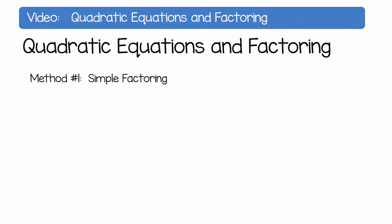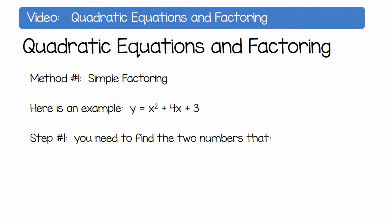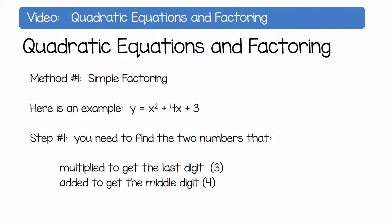Method 1, simple factoring. Here is an example: y equals x squared plus 4x plus 3. To factor this, you need to find the two numbers that multiplied to get the last digit 3, but also added to get the middle digit 4.